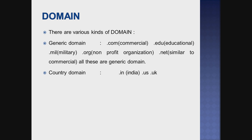We can classify domain names into two types. The first is the generic domain. For example, educational websites use .edu, military-related websites use .mil, non-profit organizations use .org, and commercial websites use .com or .net. These all come under the generic domain.